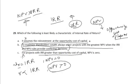So, which of the following is least likely a characteristic of internal rate of return? Option B is the correct answer, because among the three statements, it is the correct and accurate statement regarding the characteristics of an internal rate of return — making it the one least likely to be a characteristic that is false.